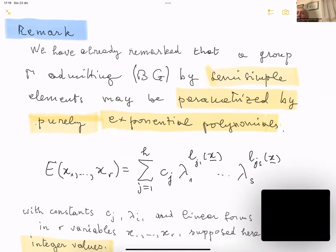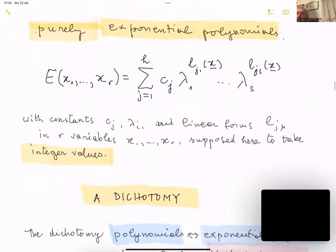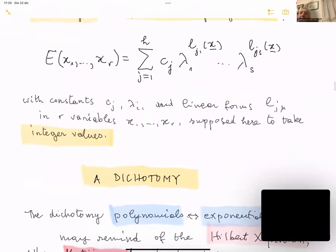We have remarked that a group with bounded generation by semi-simple elements may be parametrized by purely exponential polynomials. Let me give formally the definition: a purely exponential polynomial is a linear combination, with constant coefficients, of exponentials whose bases are fixed and whose exponents are linear forms in r integer-valued variables.